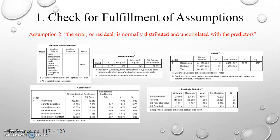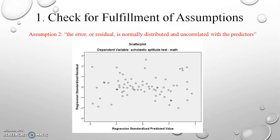The output file now includes several tables including variables entered or removed, model summary, ANOVA, coefficients, and residual statistics. But what we are most interested in is the scatter plot shown on screen.